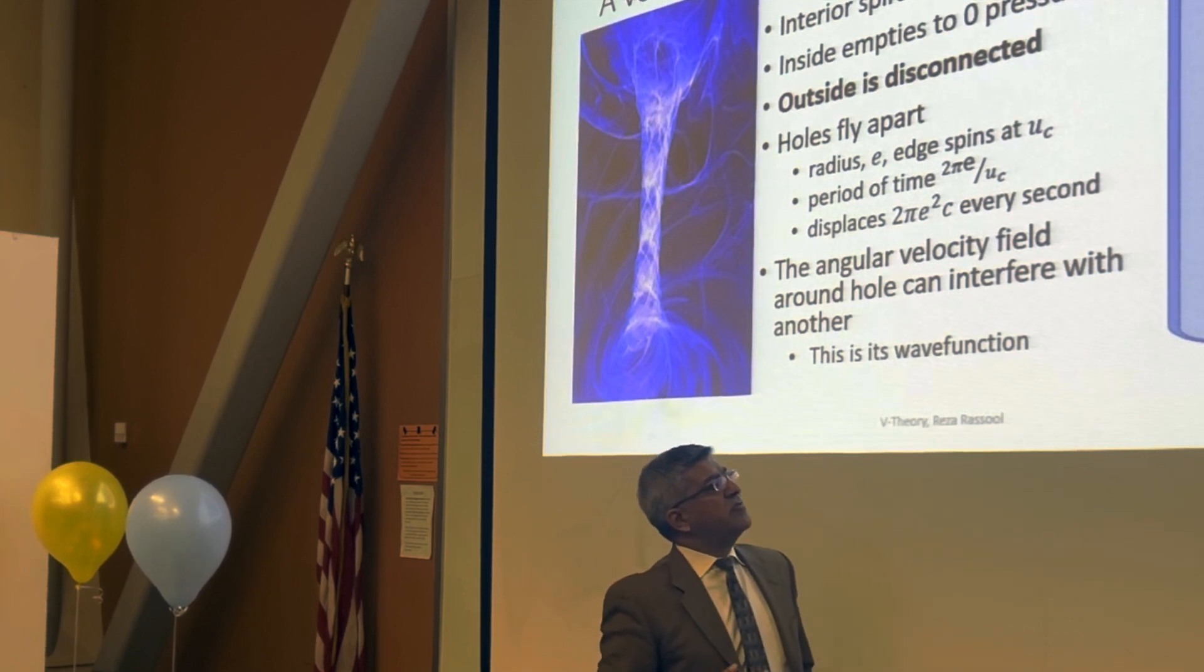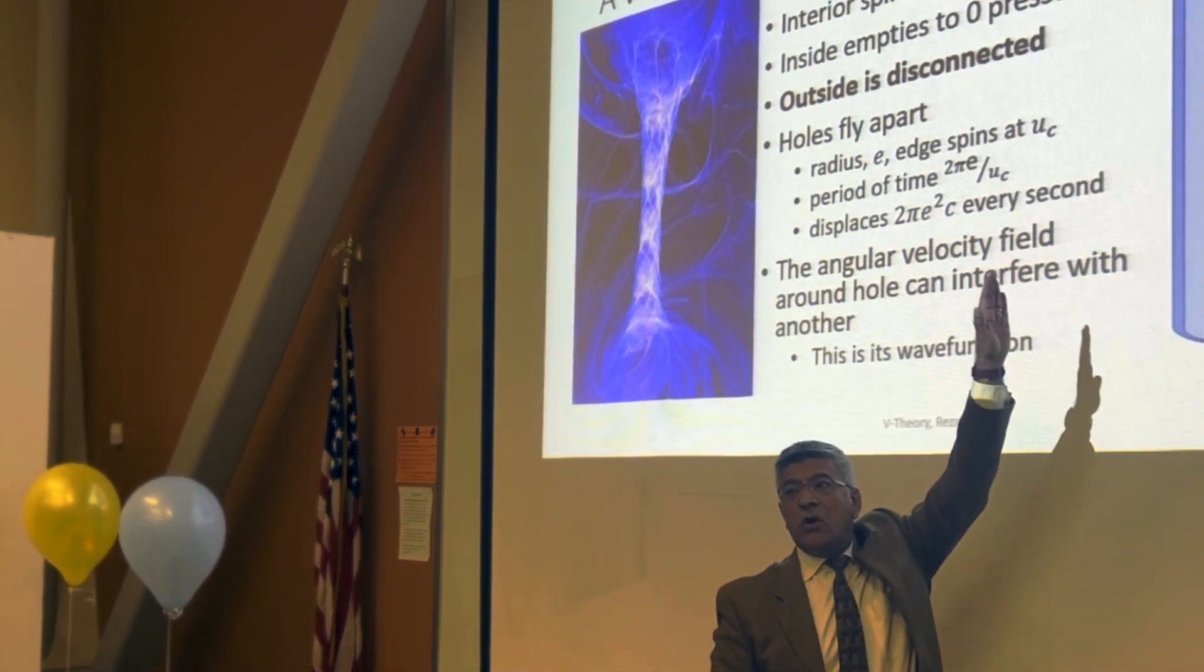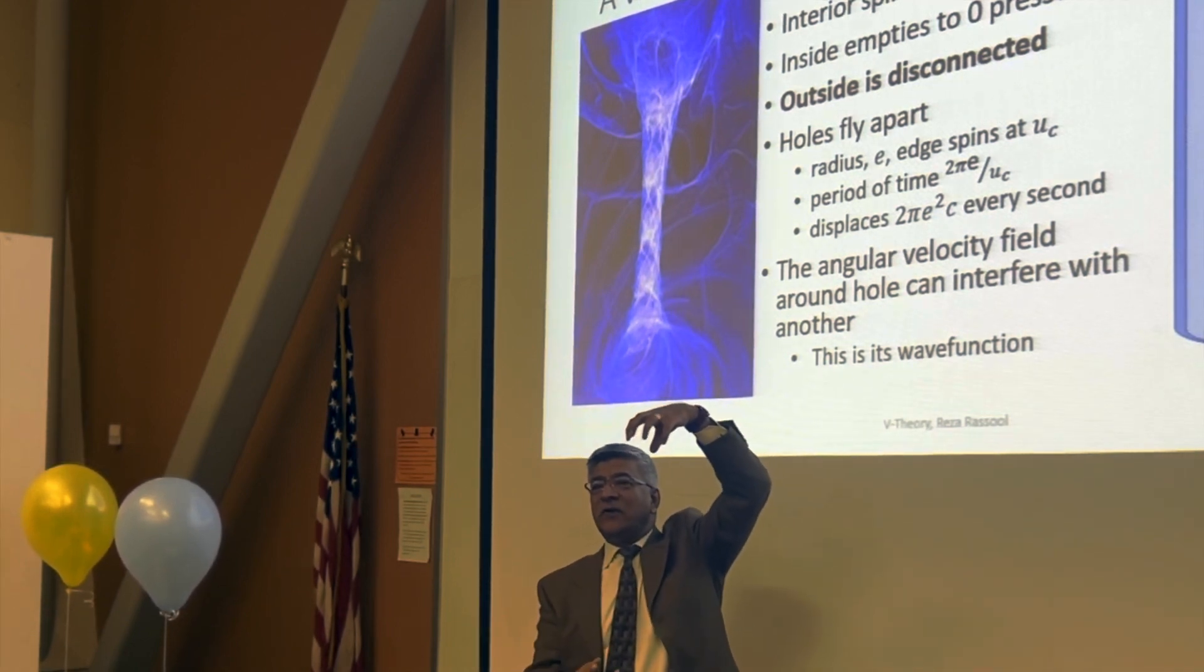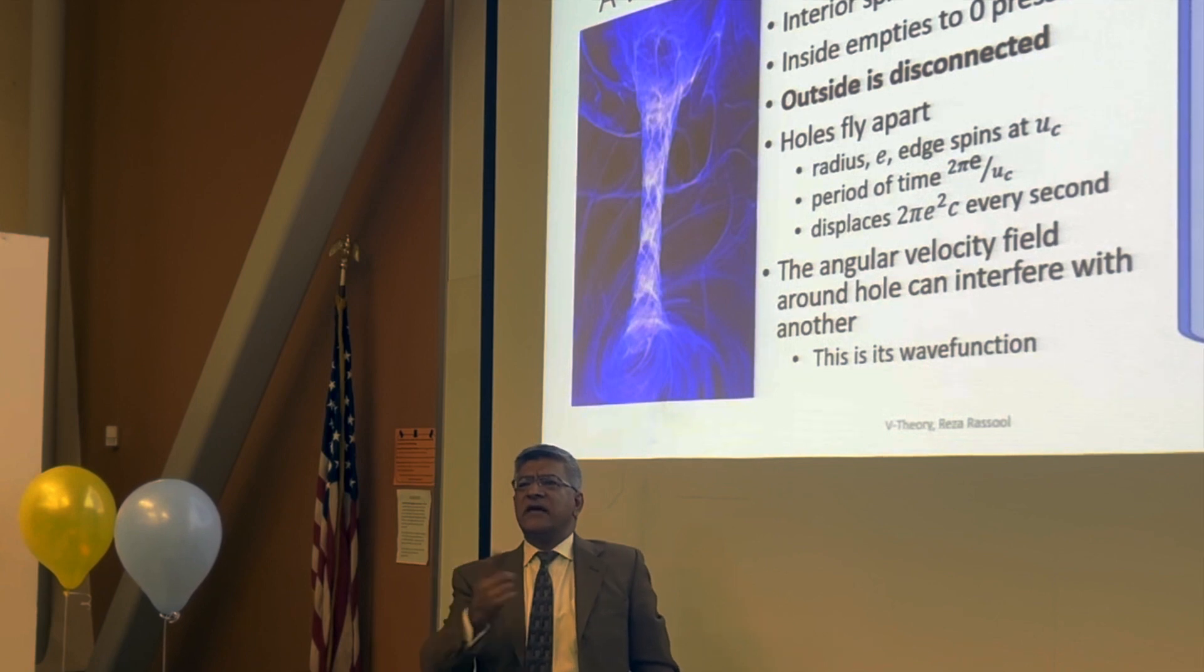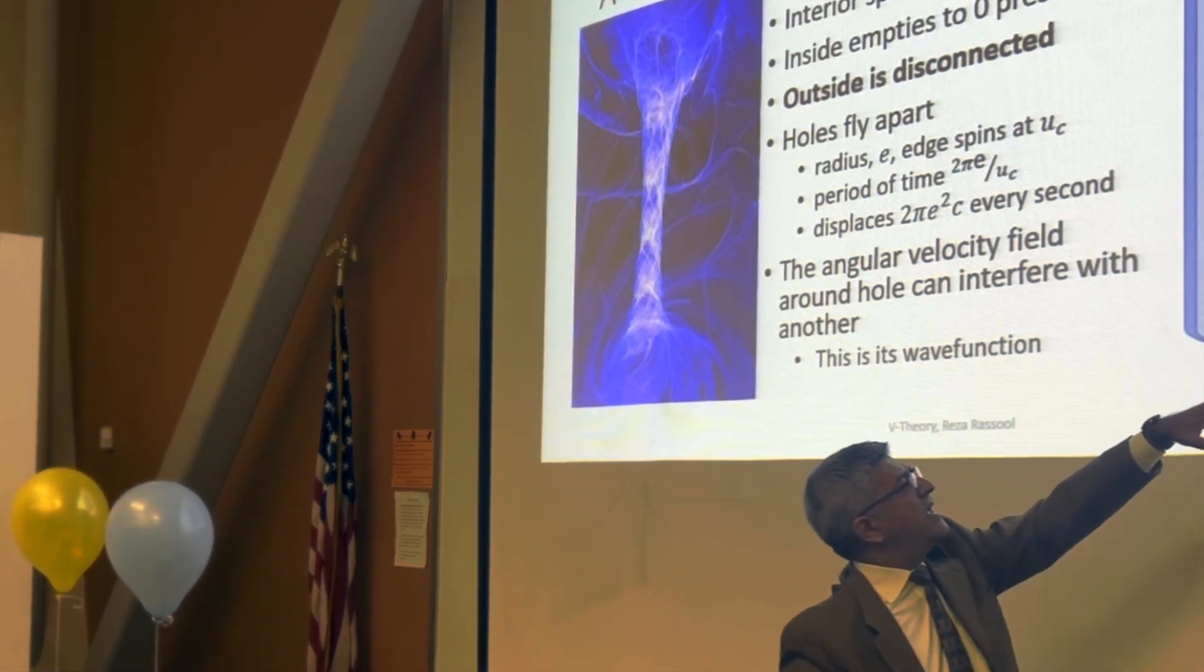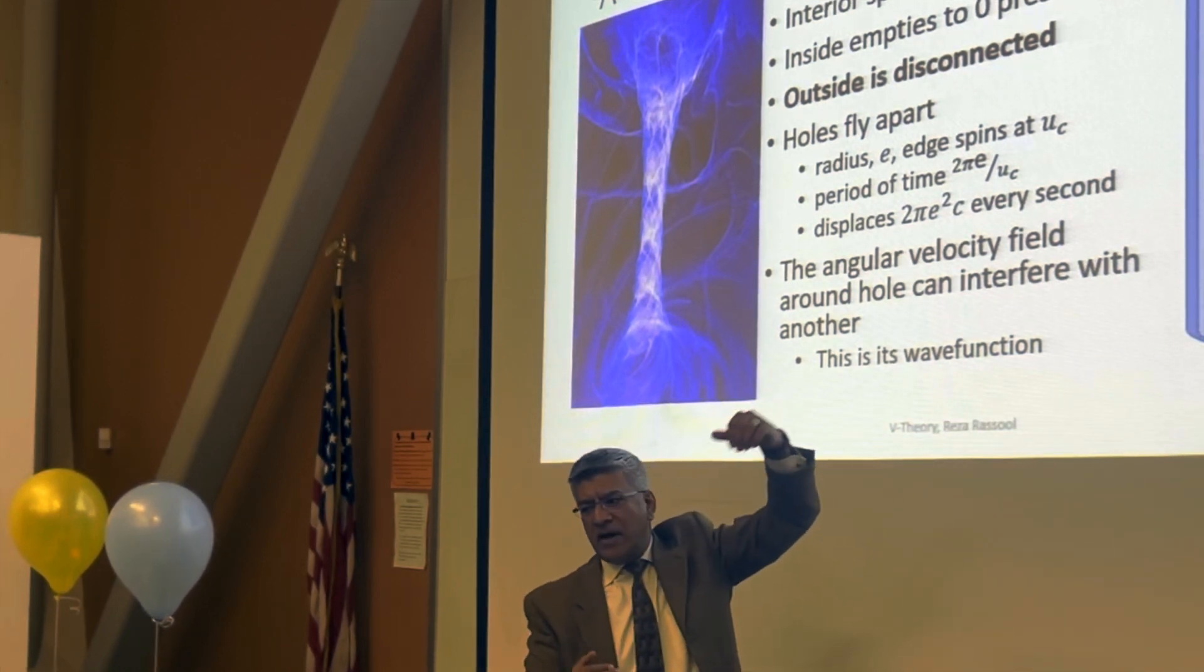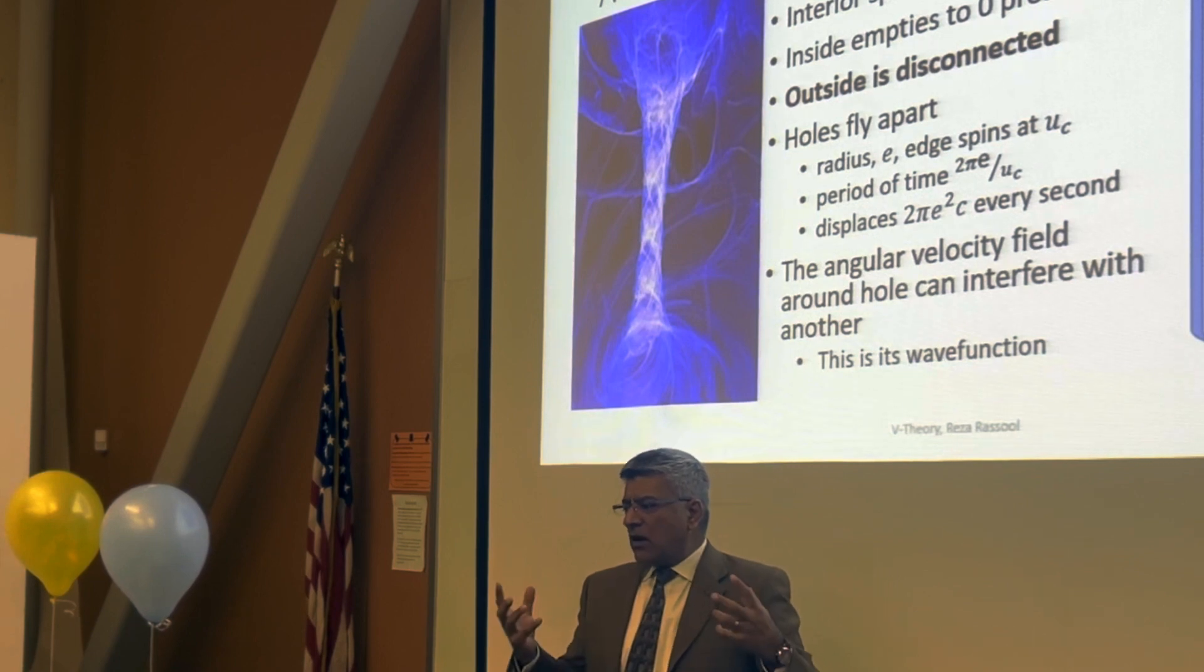The only observable is at the mouth of the vortex. Two mouths, two holes in the fluid that we can observe that there's something going on. There is an angular velocity field that grows, but that decays away from the hole.